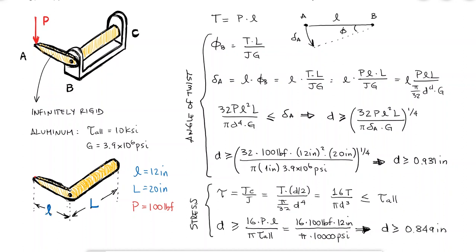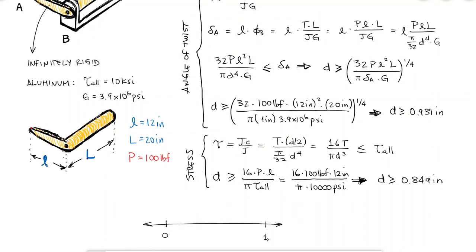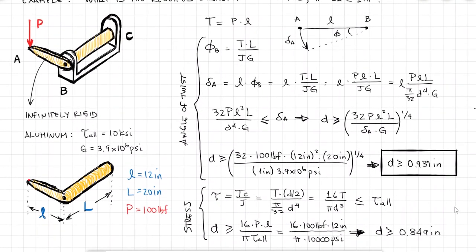Notice that by keeping the inequality, deciding what diameter to choose is very easy. Graphically, on a number line, I know that any diameter over 0.85 inches will prevent the stresses at the surface to be higher than the allowable stress and that any diameter over 0.93 inches will cause the deflection of the tip of the handle to be 1 inch or lower. If you want both conditions to be met, the diameter has to be equal or greater than 0.931 inches.